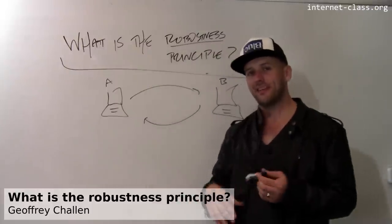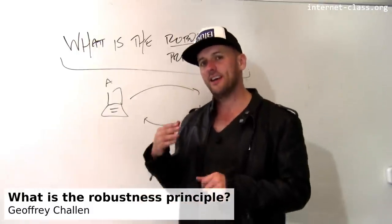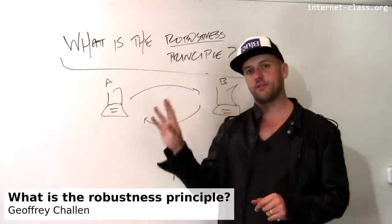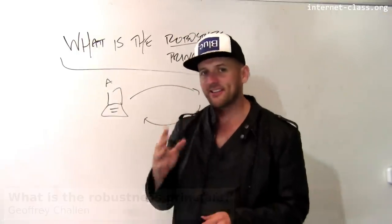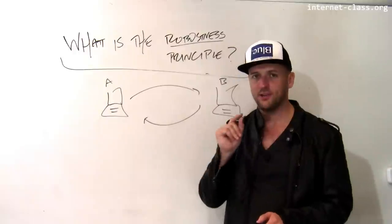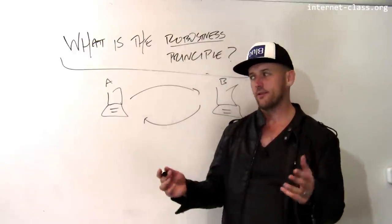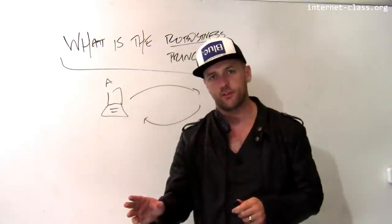Another design principle on the internet that's equally important to the end-to-end principle but doesn't really get as much attention is something known as the robustness principle. And particularly if you're going to design and implement computer software, the robustness principle is something that's worth paying attention to. It's worth thinking about how this helped the internet grow and thrive. So what is the robustness principle?